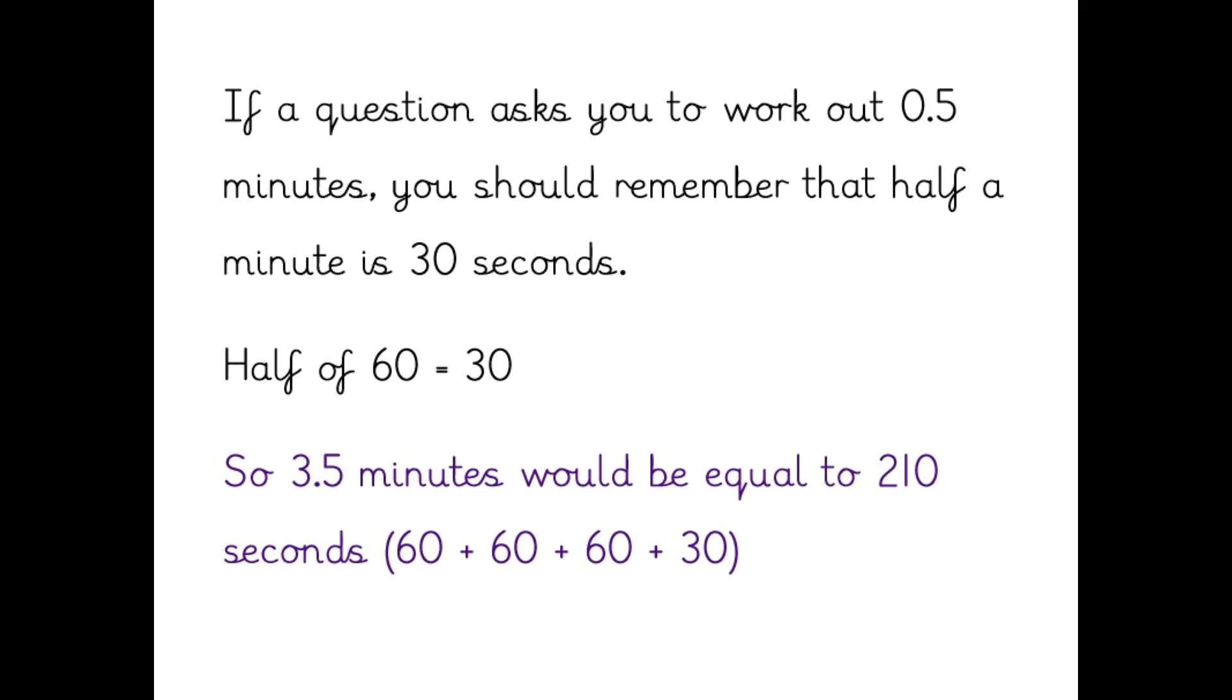You might come across a question which asks you to work out 0.5 minutes or half a minute. And you can work out that this is 30 seconds because half of 60 is 30. For example, if you have a question which asks you to work out 3.5 minutes in seconds, this would be equal to 210 seconds because 60 add 60 add 60 add 30 is 210.